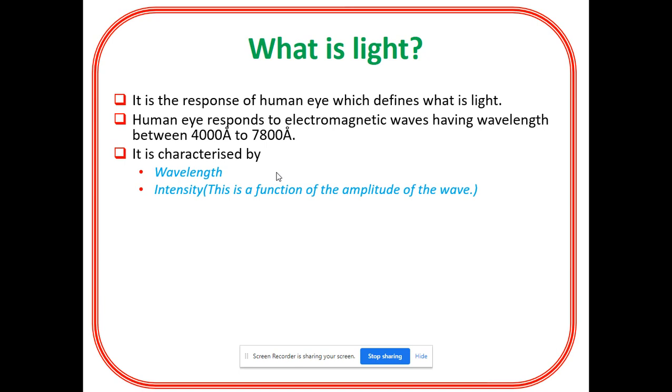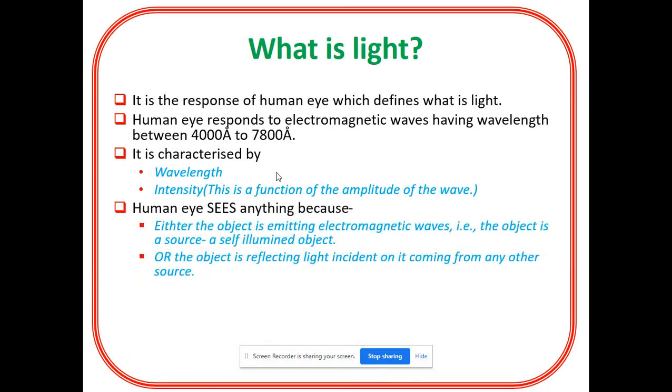It is characterized by its wavelength as well as intensity. The wavelength is defined as the distance between any two points on a wave that are in same phase. That means the wavelength can be defined as the separation between two consecutive crests or it may be the separation between two consecutive troughs. The another term which is characterized for light is its intensity. This intensity is a function of amplitude of wave.